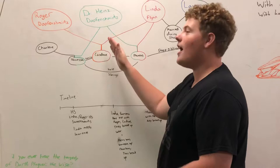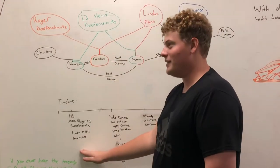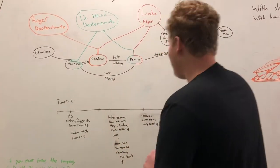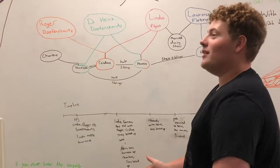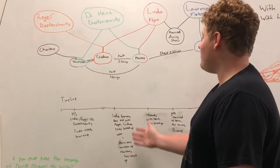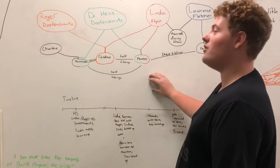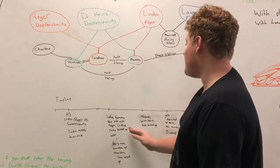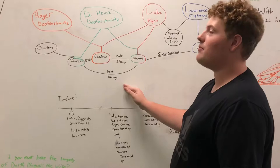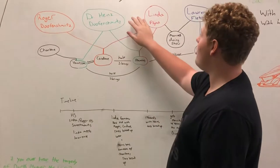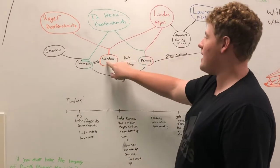This is also the same time when Dr. Hines Doofenshmirtz makes Balloon, but that's not really relevant to the story. After high school, Linda releases her single, becomes very famous. Her and Roger are still dating. They have a kid while she's on tour. That kid turns out to be Candace. This causes them to break up, so Roger and Linda are no longer together. They are the parents to Candace.